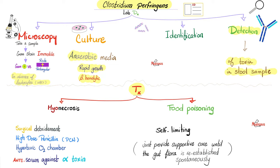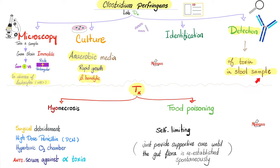Now to today's topic: diagnosis and treatment of Clostridium perfringens. Diagnosis — microscopy: it's a gram-positive rectangular rod, and you will see the bacteria without leukocytes, which is important. Can I culture it? Yes, it's easy. It's anaerobic, so we use anaerobic media. They are rapidly growing organisms on culture and beta-hemolytic on blood agar. You can also detect the toxin in a stool sample since they colonize your gut.